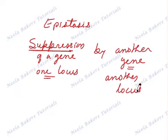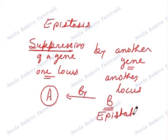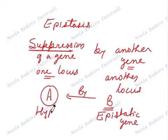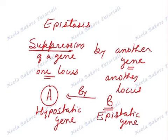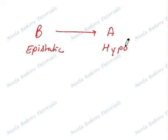Let us take an example to understand this. Say there are two genes, gene A and gene B. Gene A is getting suppressed by gene B. The gene which is suppressing the other gene is known as the epistatic gene, and the gene which gets suppressed is known as the hypostatic gene. Here, B is the epistatic gene and A, which is getting suppressed, is the hypostatic gene.